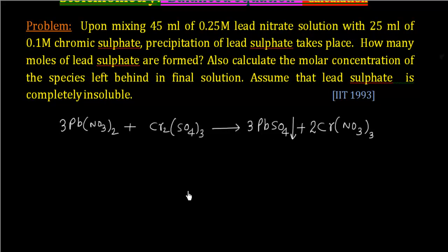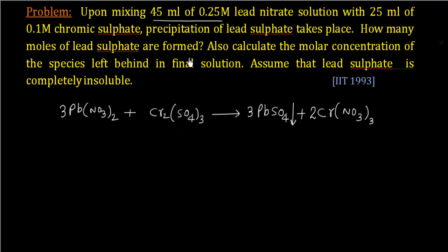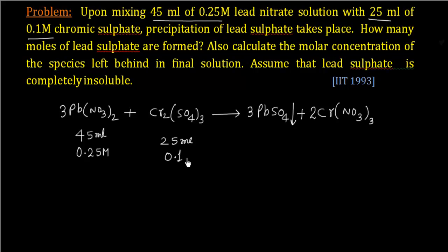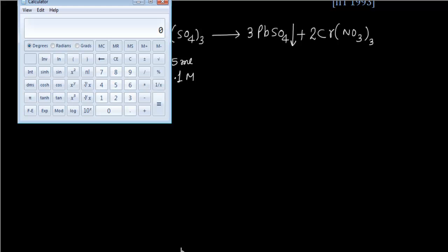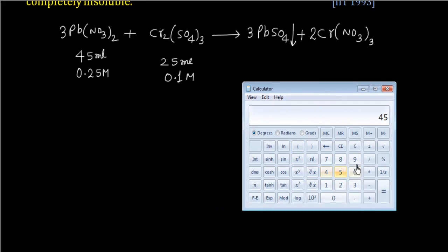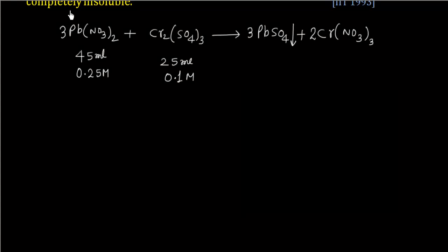The question says we have taken 45 ml of 0.25 M lead nitrate and 25 ml of 0.1 M chromic sulfate. Now let us find moles. For lead nitrate: 45 × 0.25 = 11.25 millimoles. For chromic sulfate: 25 × 0.1 = 2.5 millimoles.